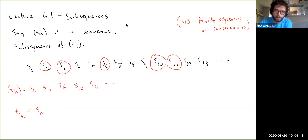So here, in this example, so this notation, it can be kind of confusing. It takes a bit of time to get used to because of these nested subscripts. But here, the sequence NK is 2, 3, 6, 10, 11, and so on, right?